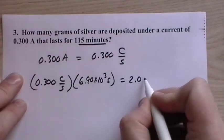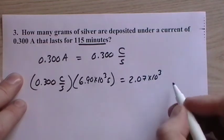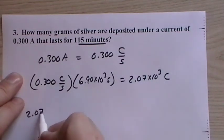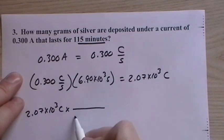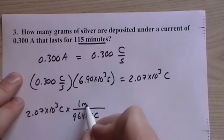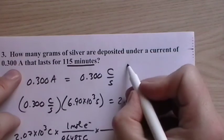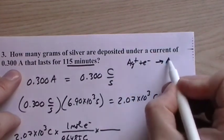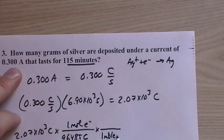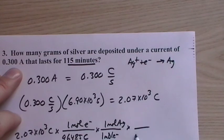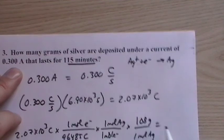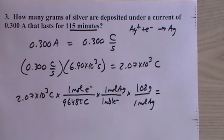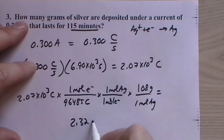And so this is 2,070, or 2.07 times 10 to the third coulombs. So that's the charge that went through this system according to Faraday's constant. And then if we look at the reaction, silver ion plus 1 electron goes to silver solid. So it's just 1. 1 mole of electrons is 1 mole of silver. And 1 mole of silver is 108 grams. So now we have the charge. We divide by Faraday's constant to get moles of electrons. Every mole of electrons produces 1 mole of silver, and 1 mole of silver is 108 grams. So this is 2.32 grams of silver.